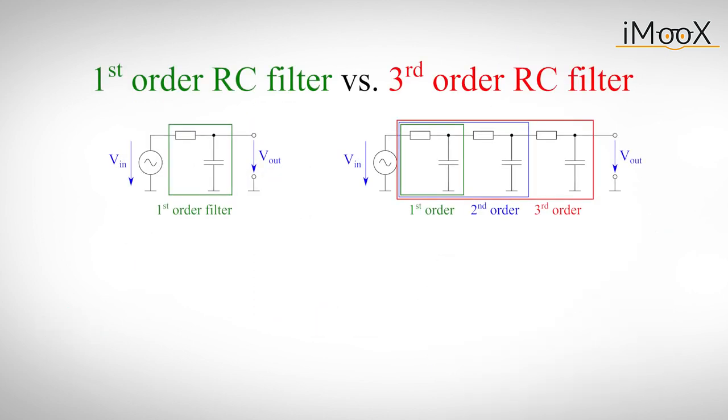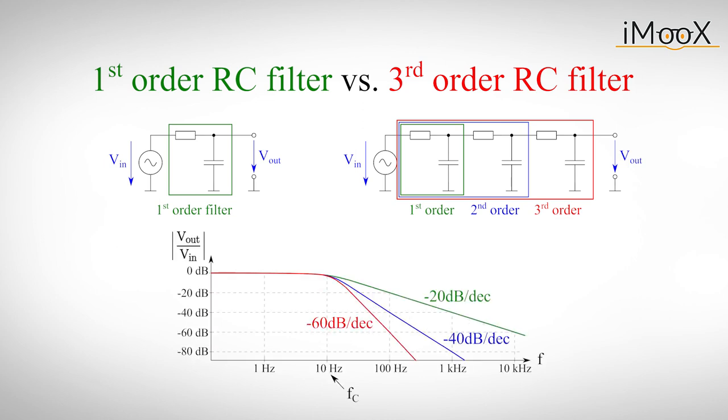To increase the slope of attenuation of this circuit, we can simply daisy chain a few first-order RC filters. Every additional capacitor increases the so-called order of the filter. Three RC low-passes in a row will hence give us a third-order low-pass filter. Every stage of the filter will increase the slope of attenuation above the corner frequency by minus 20 dB per decade. A second-order filter will attenuate the signal by minus 40 dB per decade. A third-order filter will lead to minus 60 dB attenuation per decade and so on.